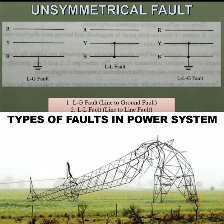The first type of unsymmetrical fault is the LG Fault. LG means Line to Ground — one line makes contact with the ground. That is called an LG Fault. The second type is the LL Fault. LL means Line to Line — one line comes in contact with another line.